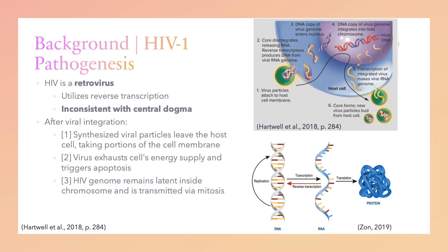During infection, HIV binds to and injects its cone-shaped core into cells of the human immune system. The virus uses reverse transcriptase to copy its RNA genome into double-stranded DNA molecules in the cytoplasm of the host cell. The double helixes then travel to the nucleus where another enzyme, integrase, inserts them into a host chromosome. The events of this portion of the life cycle make HIV a retrovirus — an RNA virus that, after infecting a host cell, copies its single strands of RNA into double helixes of DNA that can be integrated into the host chromosome.